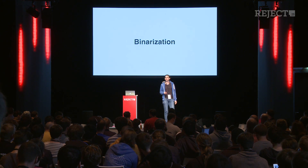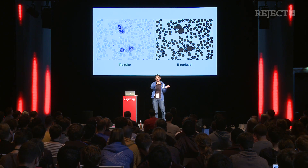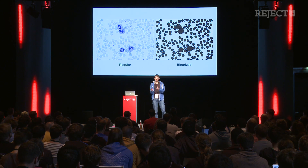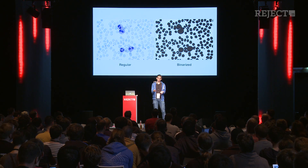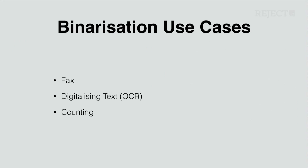So let's start with binarization. Binarization is the technique to take a normal pixel image and create a binary image out of it, meaning it only has zeros and ones. You can visualize it as black and white. There are several use cases for it — one old one being faxes. We probably don't need that anymore, but digitalizing text is quite important if you don't have other tools doing it for you, and counting objects can also be something useful out of it.